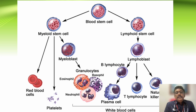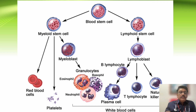On the other side, from lymphoid tissue, lymphoblasts form plasma cells, T lymphocytes, killer cells, B lymphocytes, and many other cells.